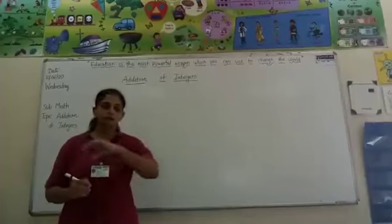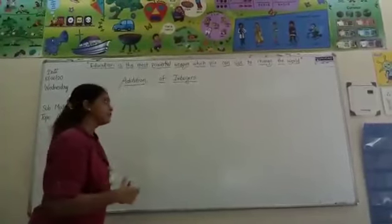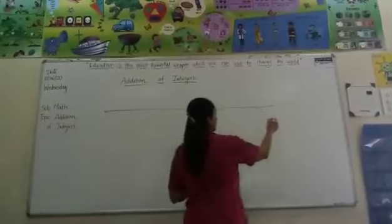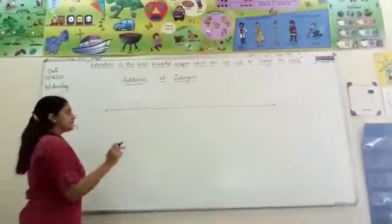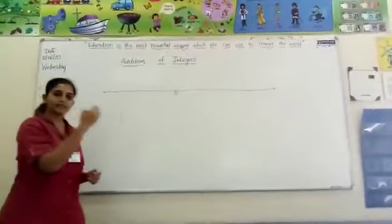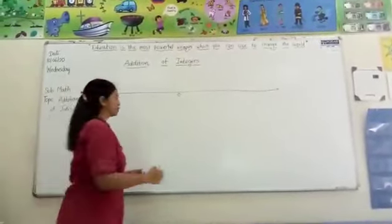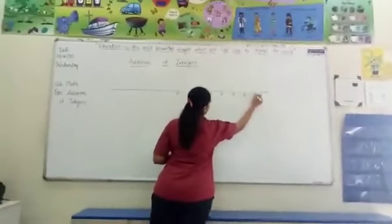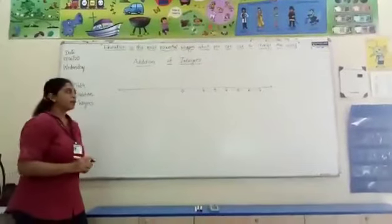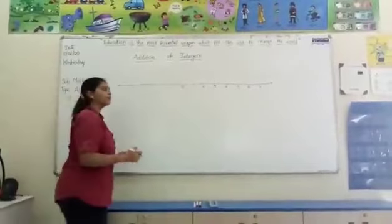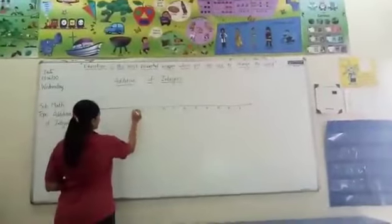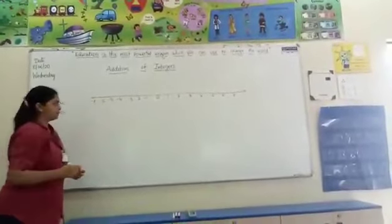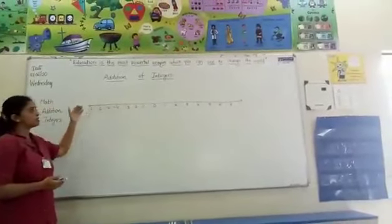In the previous class, you have already learnt how to denote integers on the number line. Again we will do it first — I am drawing the number line. On the number line, 0 comes in between. On the right hand side of 0, there are positive integers: 1, 2, 3, 4, 5, 6, 7 and it goes on. On the left hand side of 0, negative integers come: minus 1, minus 2, minus 3, minus 4, minus 5, minus 6, and minus 7. So this is the way we denote integers on a number line.